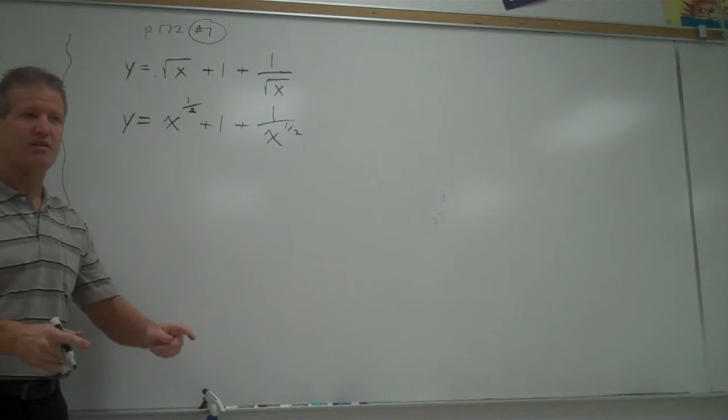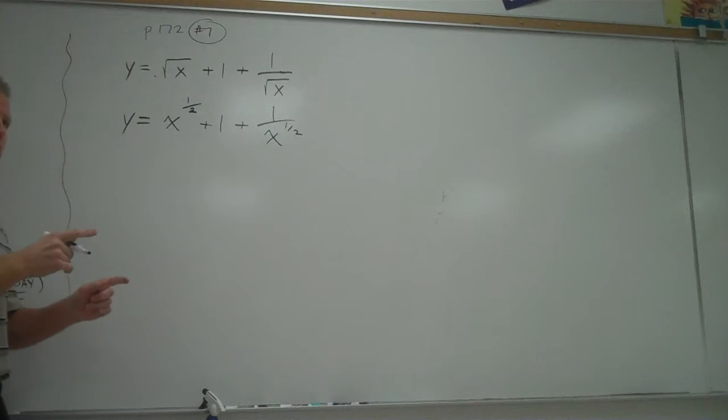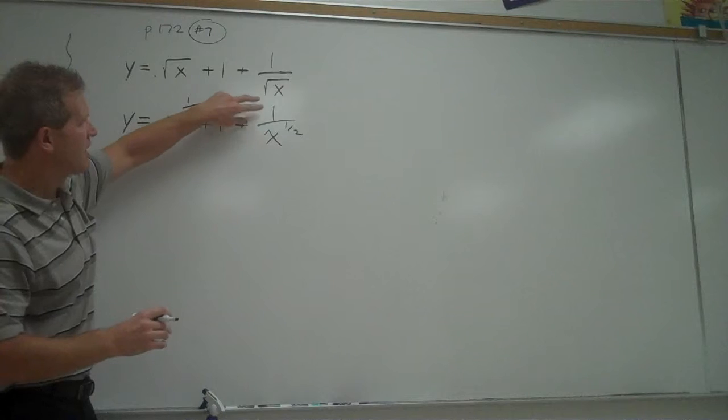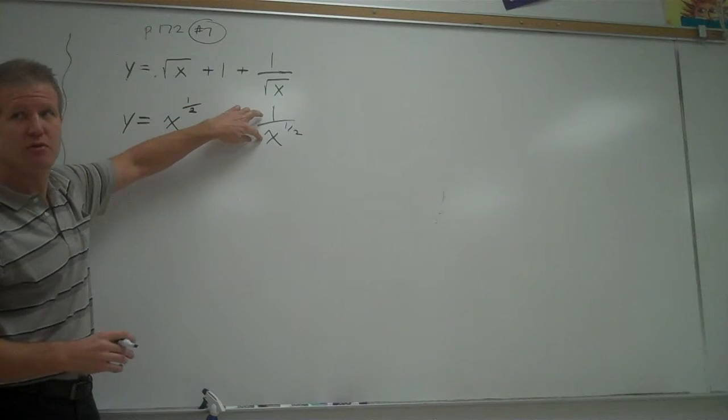Now, the other thing you want to do, besides get rid of the radicals before you do the derivative, is you really don't want to do the quotient rule if you don't have to. But if I leave this as a quotient, 1 over x to the 1 half, I'd have to do the quotient rule.